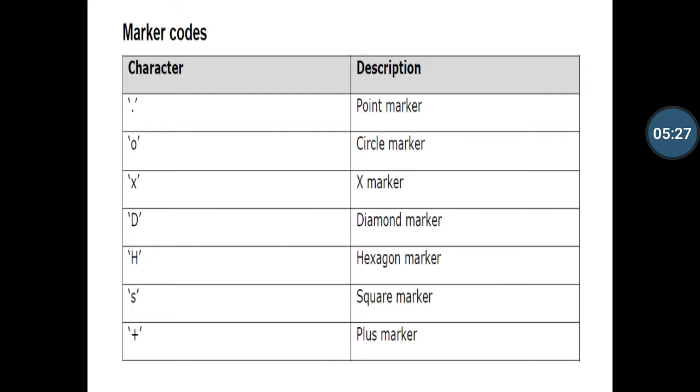If you use the point marker, then you can use the dot character. And for circle marker, you can use 'o'. And for X marker, you can use 'x'. 'd' for diamond marker, 'h' for hexagonal marker, 's' for square marker, and '+' for plus marker. That is defining your graph as per you using the characters in your coding.